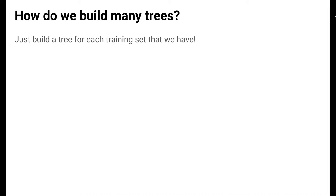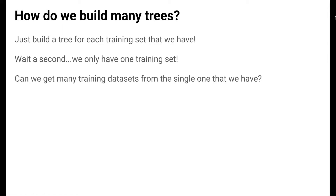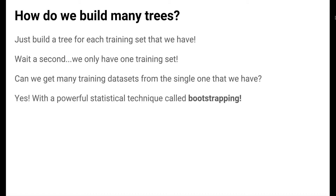So the idea is for us to build up a lot of very large trees. But how do we build up a lot of trees? A naive idea: let's just build a tree for every training set we have. But we don't have lots of training sets — we only have one. Is there a way for us to get many training data sets from the single one that we have? Yes — there's a powerful statistical technique called bootstrapping that can do this for us.